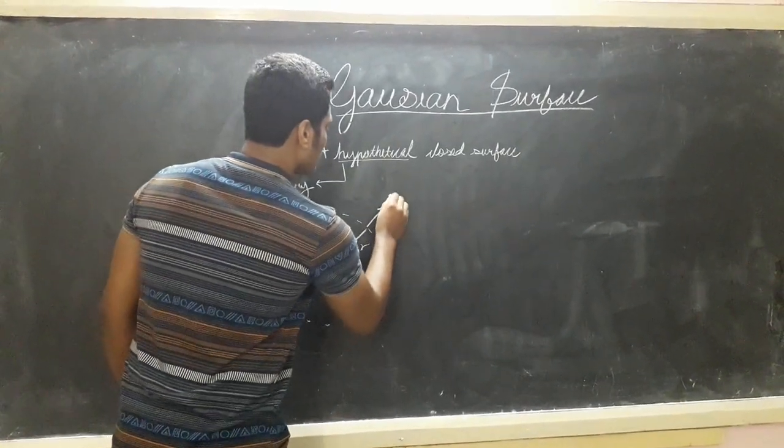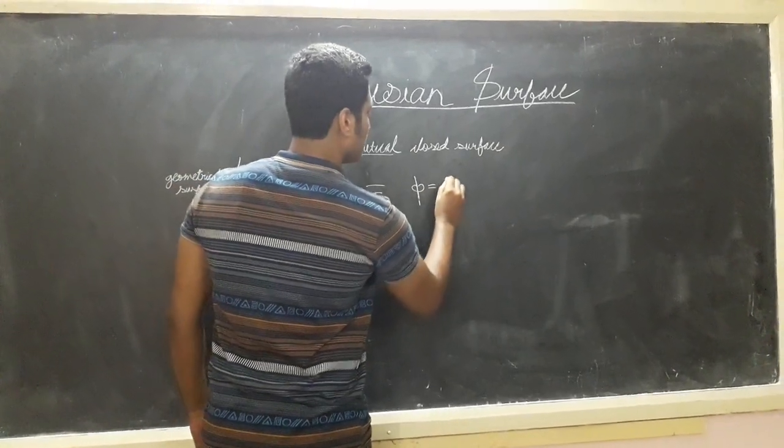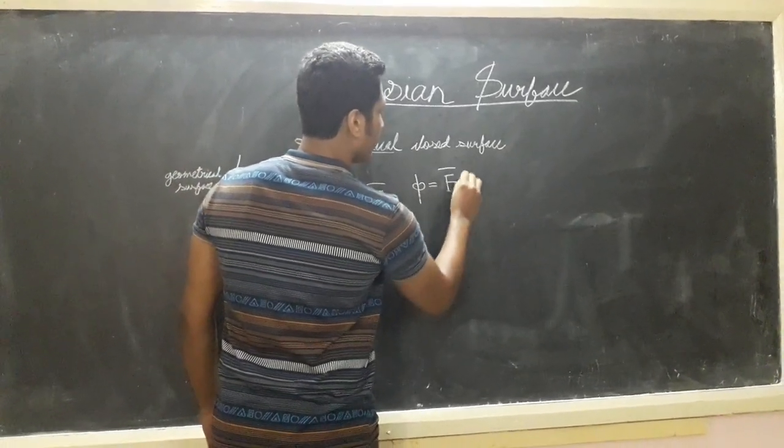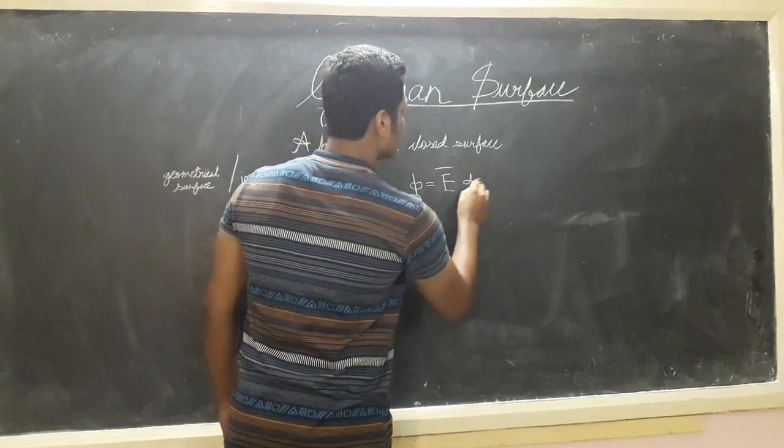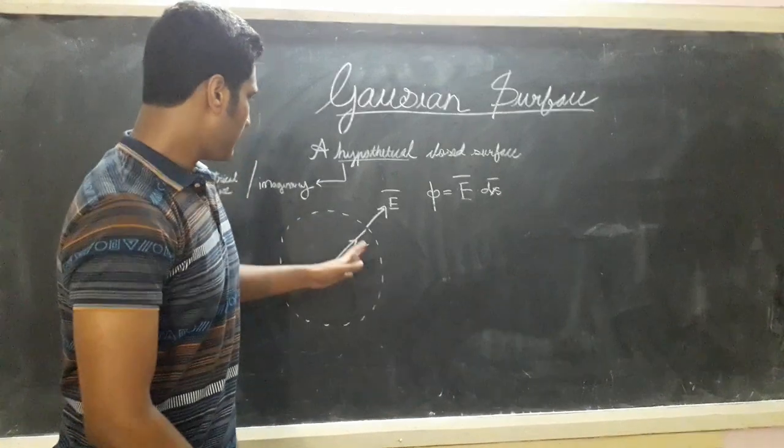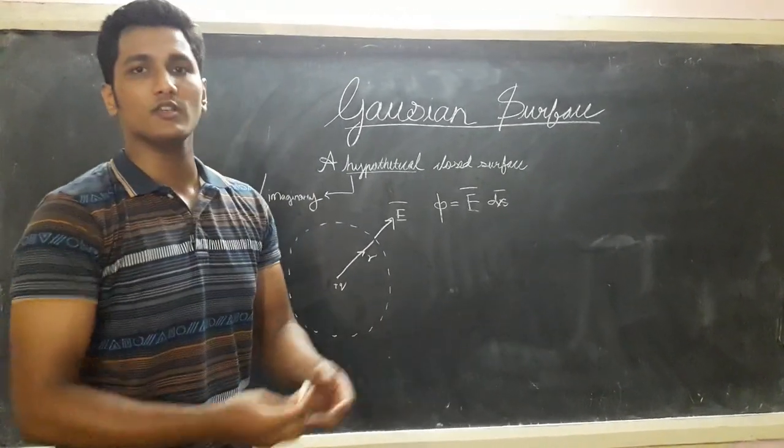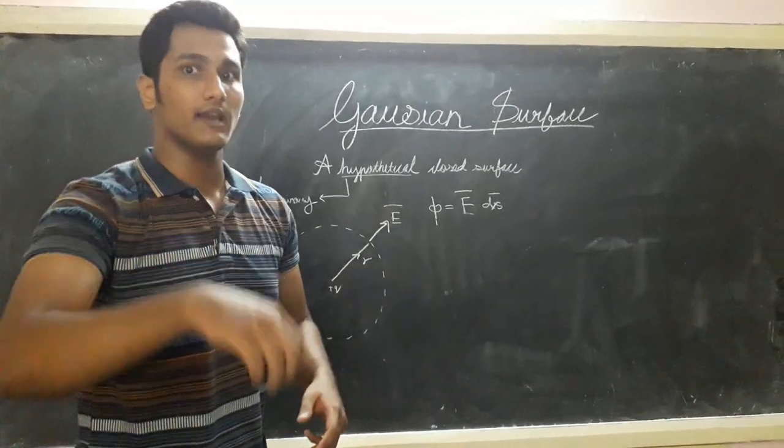So this is the electric field. And the flux is dot product of electric field and surface area. Simple. And it can be any geometrical surface. Now here it is circular, it can also be a square, it can be anything. Now let us take another example.